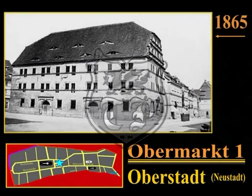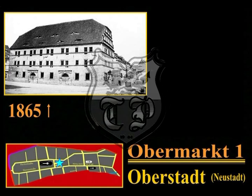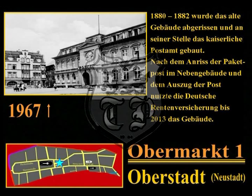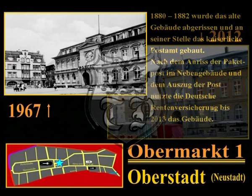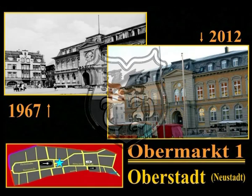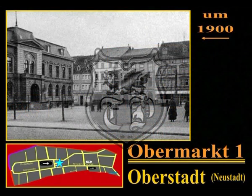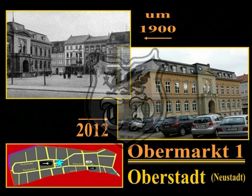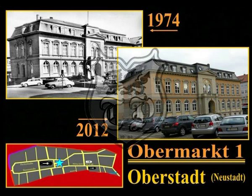Ein Bild aus dem Jahre 1865 zeigt das ehemalige Fleischerhaus, das im Jahre 1577–78 gebaut wurde. Es war Lager- und Verkaufshaus der Mühlhäuser Fleischer; um 1600 gab es immerhin 86 Fleischermeister in der Stadt. 1880 bis 1882 wurde das alte Gebäude abgerissen und an seiner Stelle das kaiserliche Postamt gebaut, das 1913 durch die sogenannte Paketpost erweitert wurde. Ende der 1990er Jahre wurde das Nebengebäude wieder abgerissen und die Deutsche Post zog aus; zuletzt war die Deutsche Rentenversicherung bis Ende 2013 hier ansässig. Aufnahmen aus den Jahren 1900 und 1974 zeigen den Obermarkt und die Post im Vergleich zum Jahr 2012.